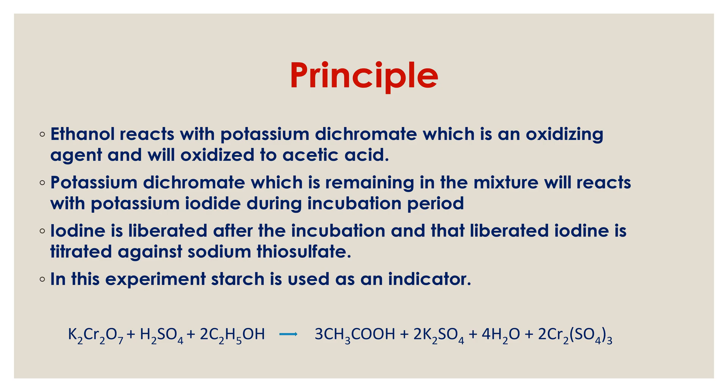As we know, in any titration method we use an indicator to identify the end point. The indicator used in ethanol estimation is starch. The reaction is: potassium dichromate + concentrated H₂SO₄ + ethanol gives acetic acid, dipotassium sulfate, water, and dichromium sulfate.